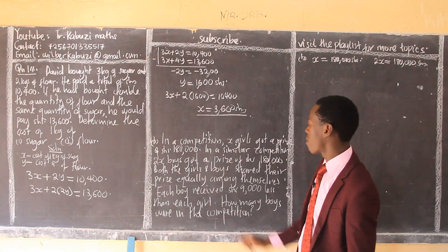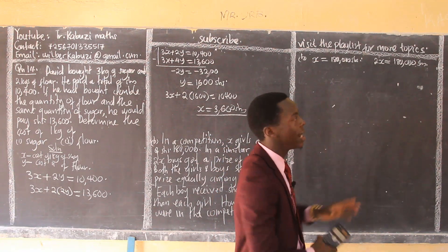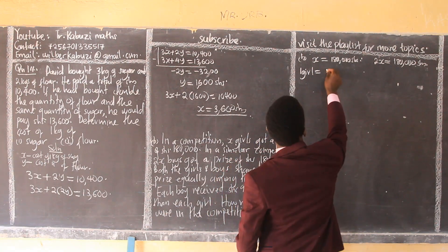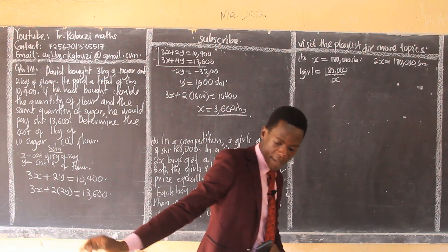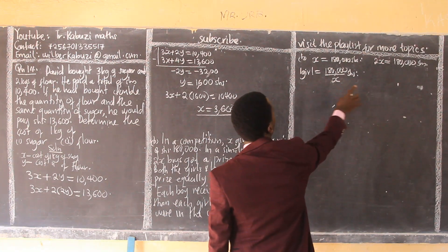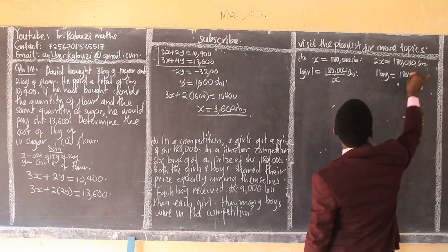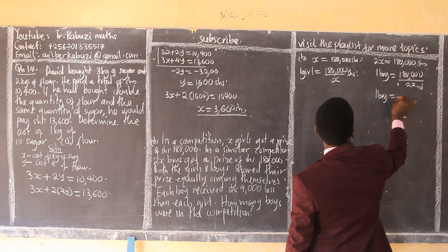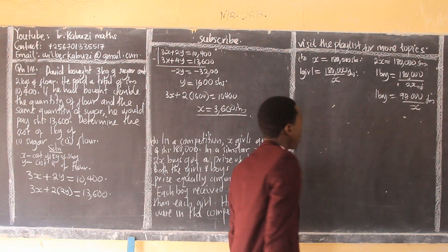They shared their prize equally among themselves. So I want to know what each girl obtained. We have x girls, so one girl obtained that amount divided by x. For each boy, we divide the boys' total by two x, so one boy obtained 90,000 over x shillings.